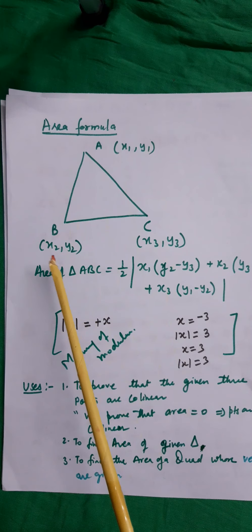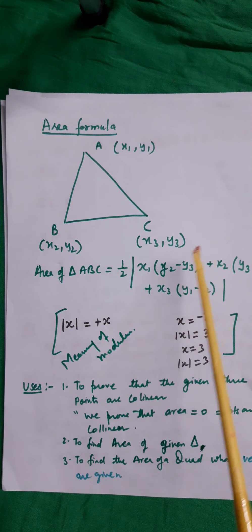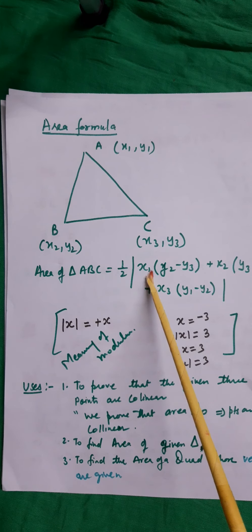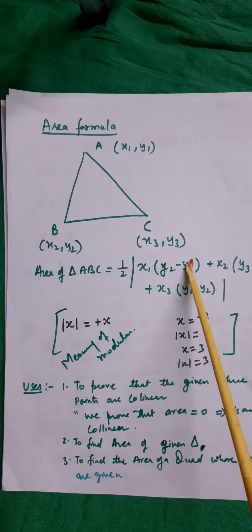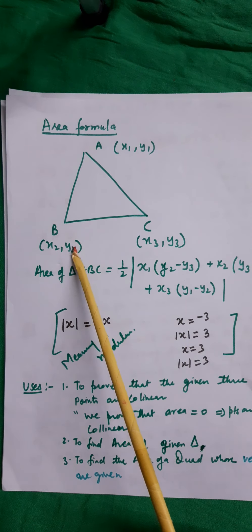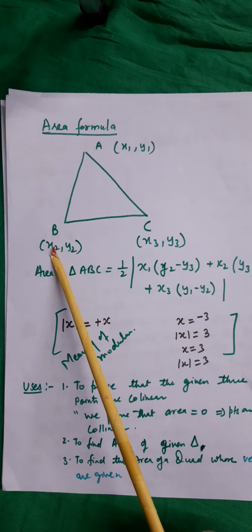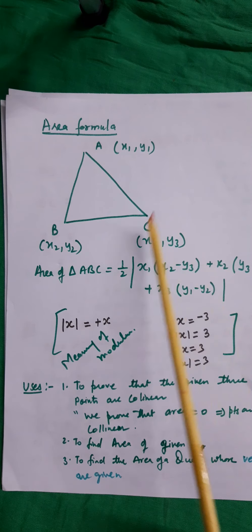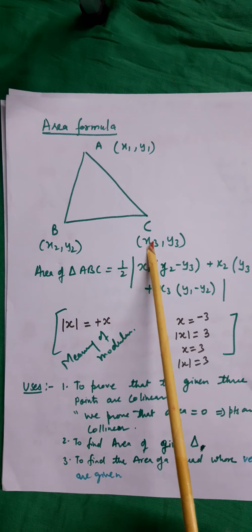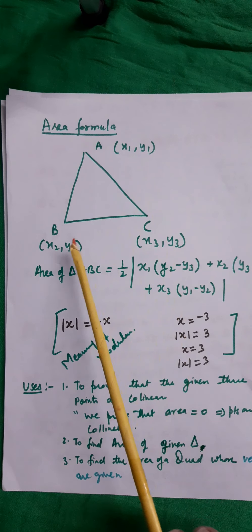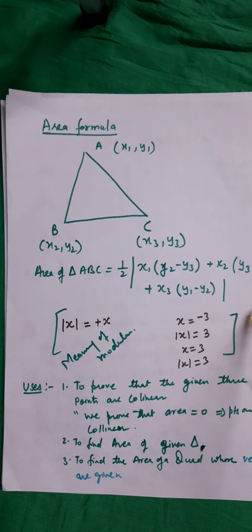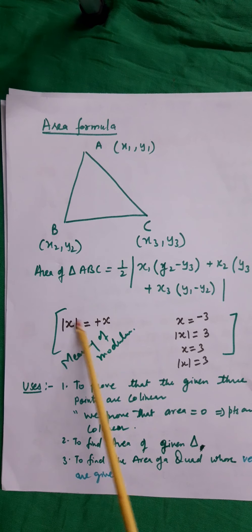What is area formula? If there is a triangle ABC and the coordinates are given as x1 y1, x2 y2, and x3 y3, then area of triangle ABC is equal to half modulus of x1 into (y2 minus y3), plus x2 into (y3 minus y1), plus x3 into (y1 minus y2).